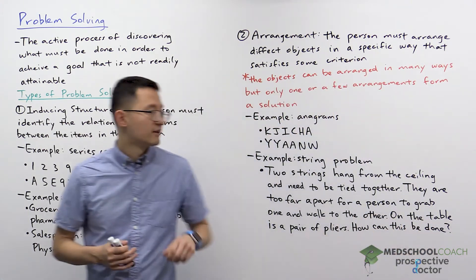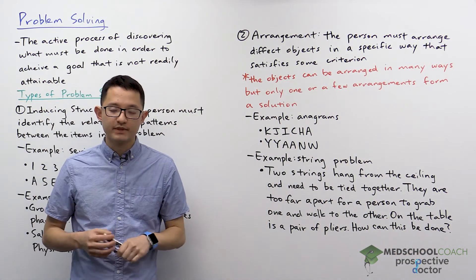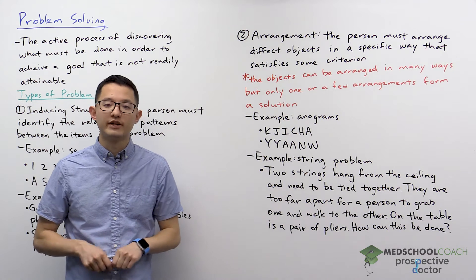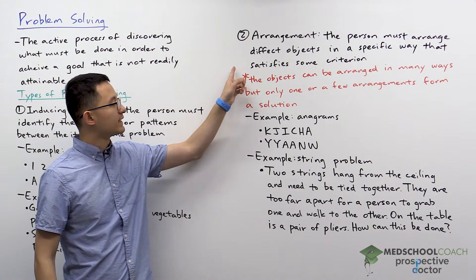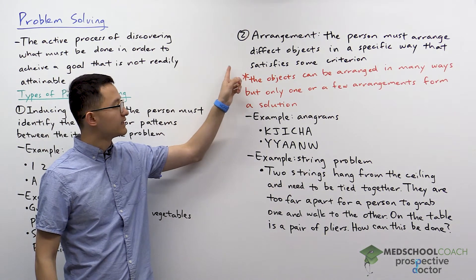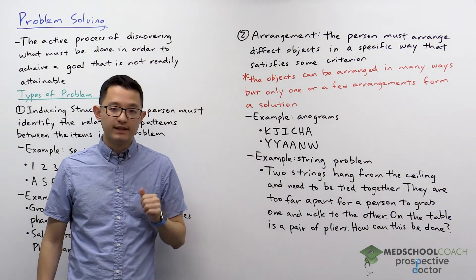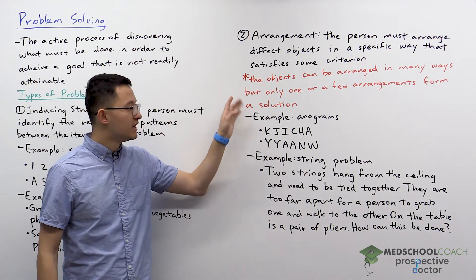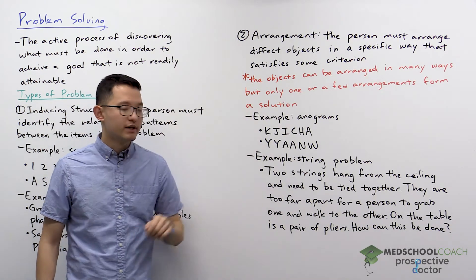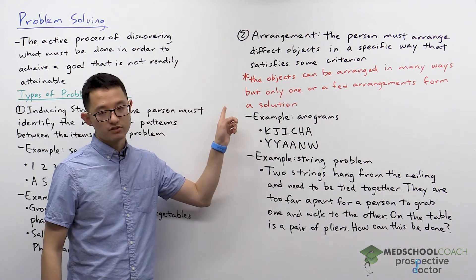Let's now take a look at another type of problem solving: arrangement. In problems of arrangement, the person must arrange different objects in a specific way that satisfies some criterion. These objects can be arranged in many ways, but only one or a few arrangements form a solution.